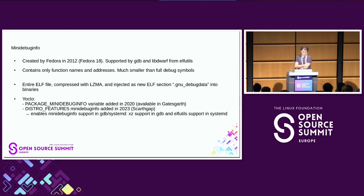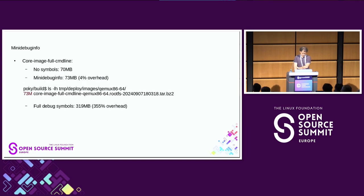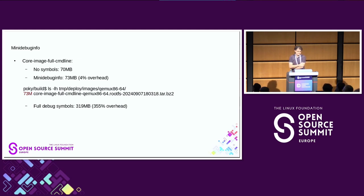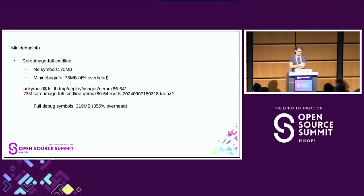GDB requires XZ support and systemd also requires LFTL support in order to support mini-debuginfo. With the same core-image-full-cmdline example: no symbols gives about 70 megabytes; with mini-debuginfo, it's about 73 megabytes — only a 4% overhead, which makes it possible in many use cases to always deploy this to your target. Full debug symbols were about 319 megabytes, so 400% overhead versus just 4% overhead.